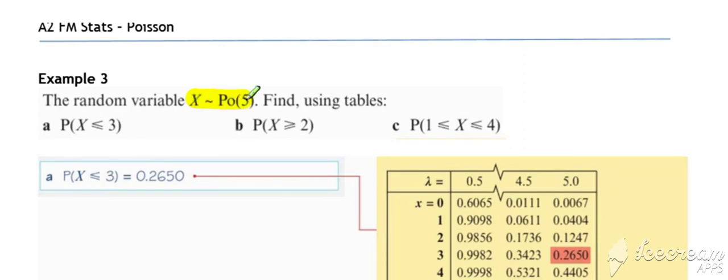Example three: the random variable X has a Poisson distribution with parameter lambda equals five. In our tables, we select a lambda value of five and we want the probability that x is less than or equal to three.